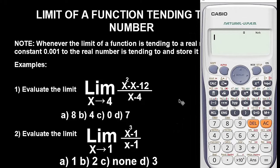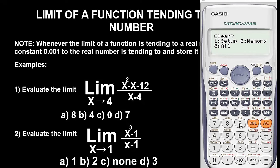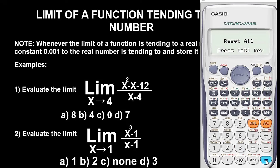The first thing we are going to do is clear the calculator — very, very important. The essence of clearing the calculator is to avoid unnecessary errors, because you might not remember whether you have performed a previous calculation. To clear it, press Shift, then 9, follow the instruction, press 3, and press equals twice. We have now cleared the calculator.